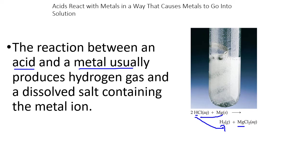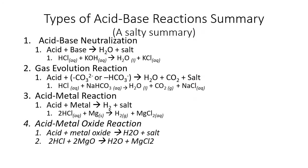To summarize so far: neutralization is when you have an acid and an Arrhenius base — something with an OH — and that makes water and a salt. Gas evolution is when you have an acid combining with something that contains carbonate or bicarbonate, producing water, carbon dioxide, and a salt. And if it's an acid with a metal, you produce hydrogen gas and a salt.